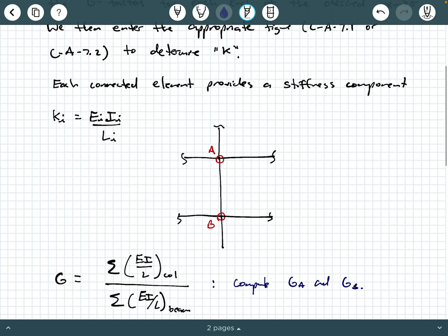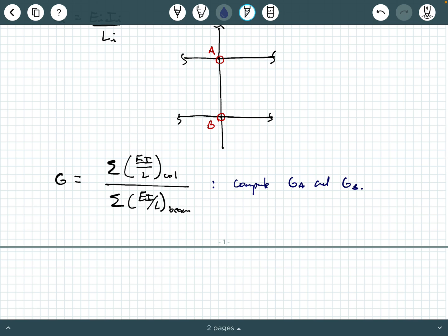Then what we're going to do is we're going to enter into those alignment charts, the figures that I already mentioned, CA71 or CA72, and we enter into those charts and we determine what our stiffness value K is for that particular member. So some things to be very careful about.